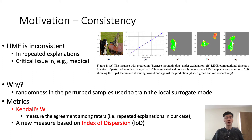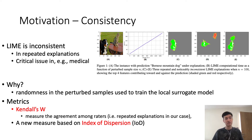The first problem of LIME is inconsistency. If we run LIME three times to explain an image with a label of dog, we can easily get three different results. This is a critical problem for some domains like the medical area. The reason LIME is inconsistent is because of the randomness in the perturbed samples used to train the local surrogate model. In our experiments, we use the well-established Kendall's W as a measure of inconsistency, and we also introduce a new metric based on the index of dispersion.